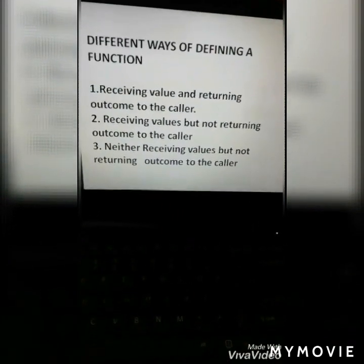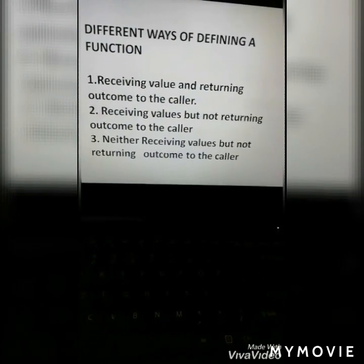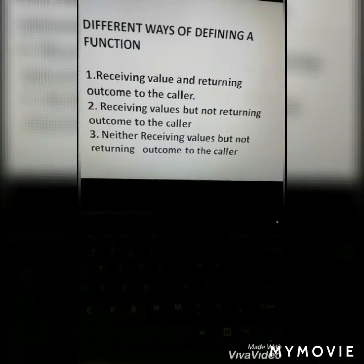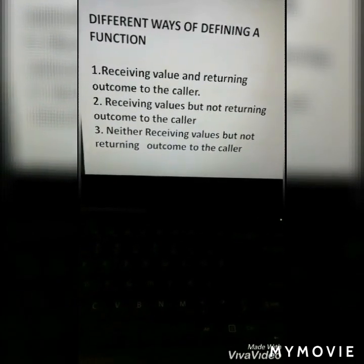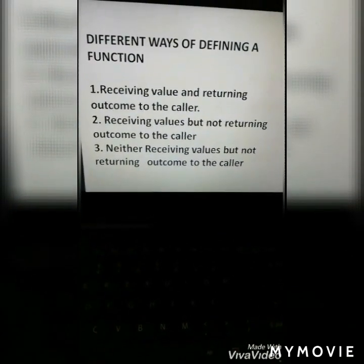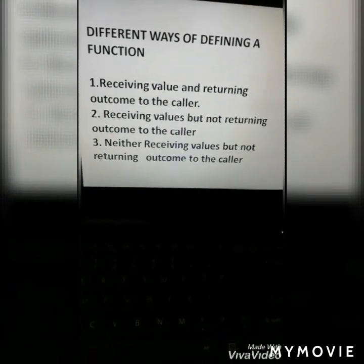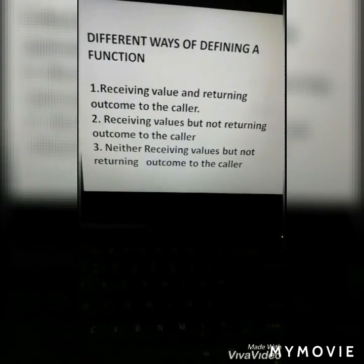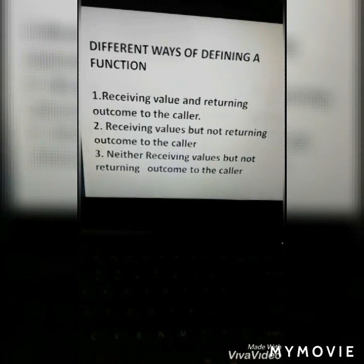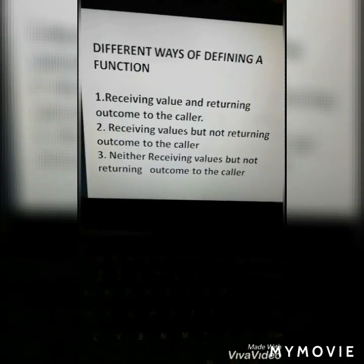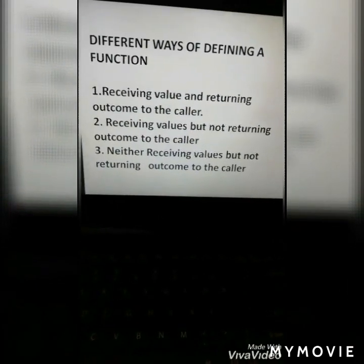The next topic is different ways of defining a function. There are three ways: number one, receiving value and returning outcome to the caller; number two, receiving values but not returning outcome to the caller; number three, neither receiving values nor returning outcome to the caller. Today we will discuss the first point — receiving value and returning outcome to the caller. In the question, it will not mention these three explicitly. If the question says the function should return a value, then you have to use the first method — receiving value and returning outcome to the caller — which means you have to use the return statement.